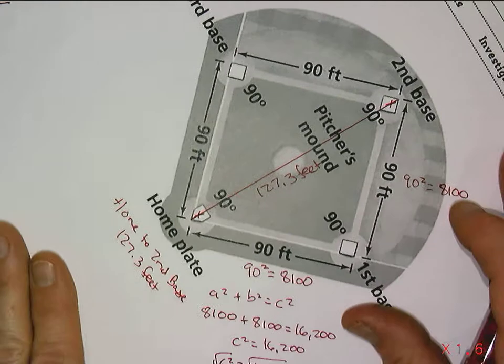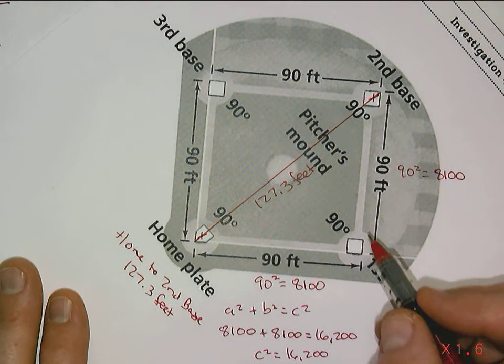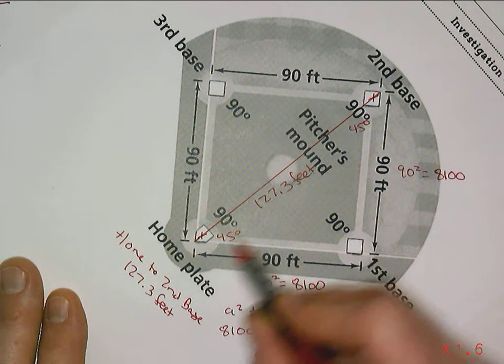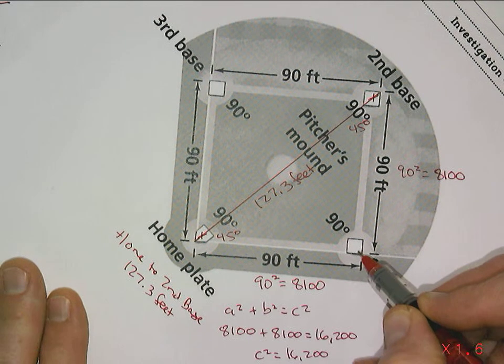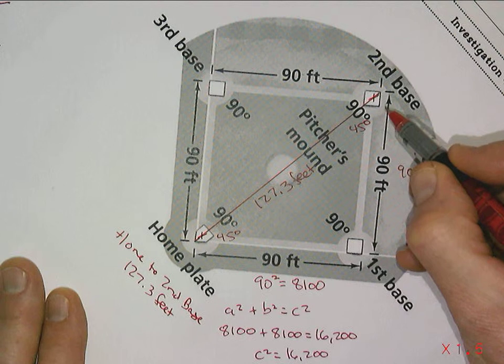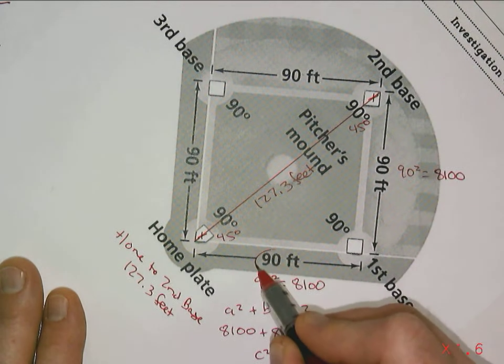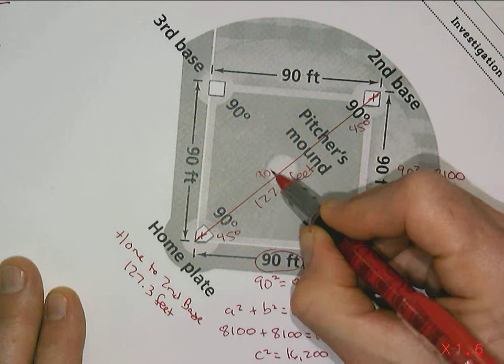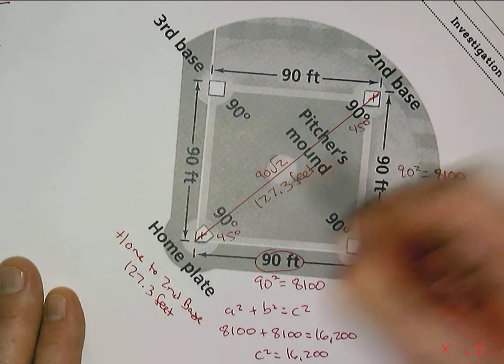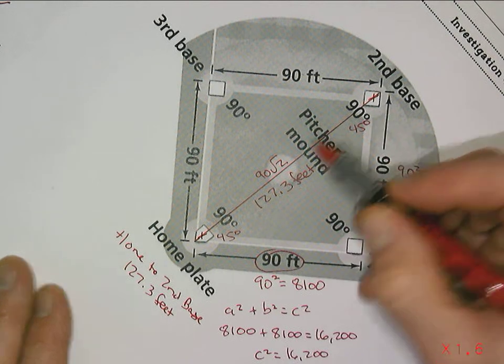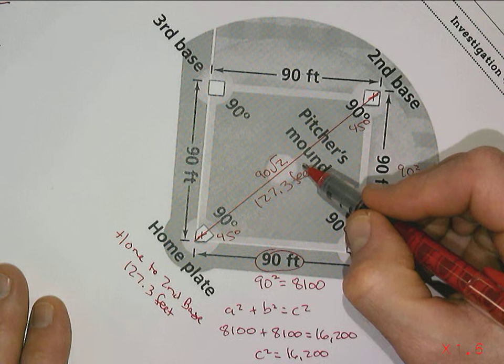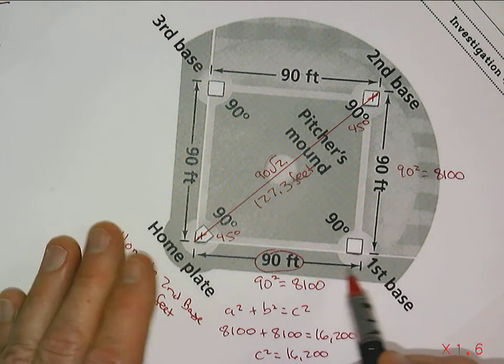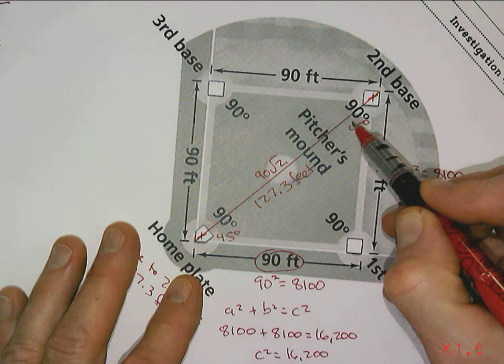The other interesting thing about this triangle is it's actually what we would call a 45-45-90 triangle, so we have two 45-degree angles and a 90-degree angle. Really, we have the diagonal of a square, and one of the things that's true of all square diagonals is if you just take this one side length and multiply it by the square root of 2, so 90 times the square root of 2, you will get that distance.